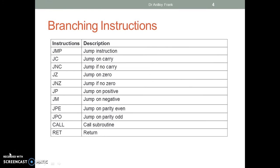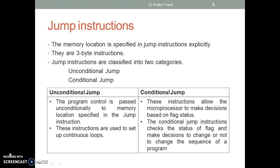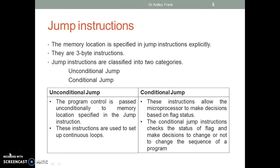The table enlists the branching instructions of 8085. The jump instructions: the memory location is specified in the jump instruction explicitly. They are 3-byte instructions. Jump instructions are classified in two categories: unconditional and conditional jump.